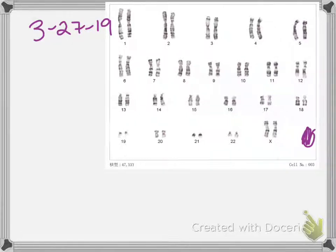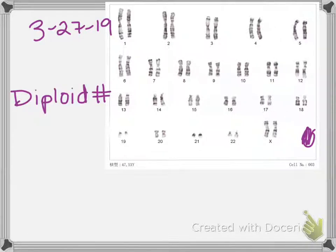There are two words we didn't use yesterday that were on your vocab that I want to introduce and talk about a little bit right now. The first one is diploid number. There's a prefix in there that you might recognize, which is 'di', D-I. You might want to have the picture of a karyotype on your screen while we talk about this.